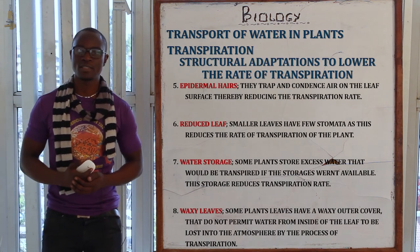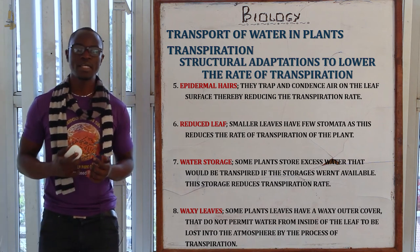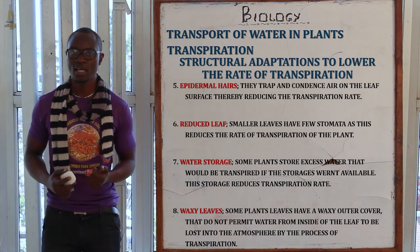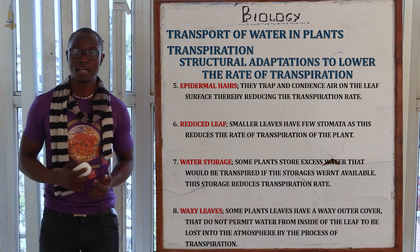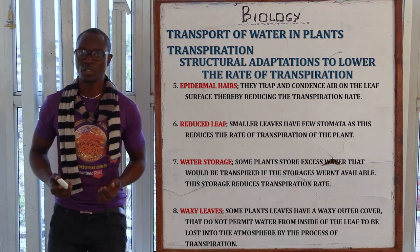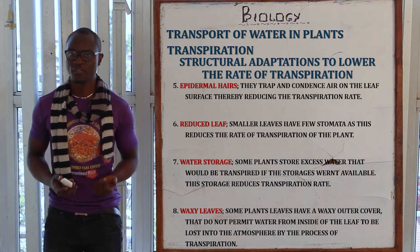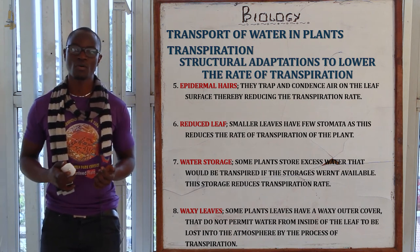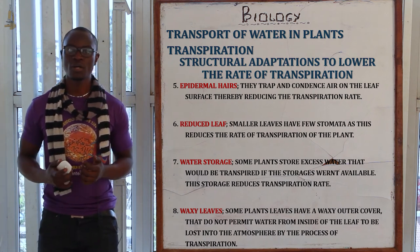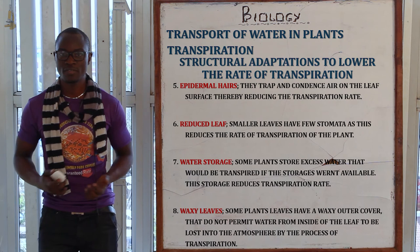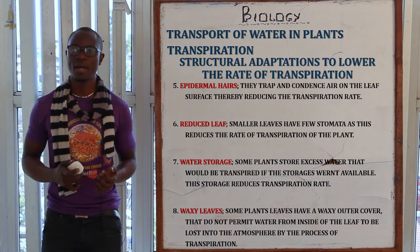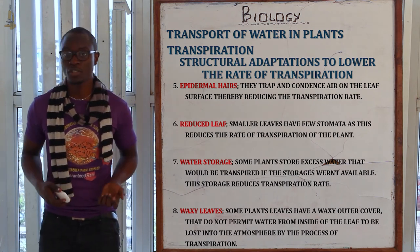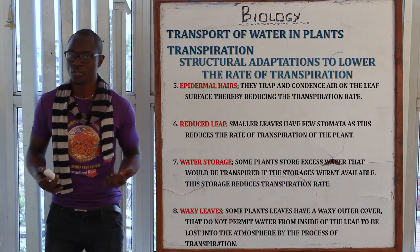Epidermal hairs trap and condense water vapor, reducing the rate of transpiration; leaves without epidermal hairs have a high rate of transpiration. Reduced leaf size also lowers transpiration. Some plants store water in stems or leaves to reduce transpiration, and some have wax-coated leaves. All these are structural adaptations by which plants reduce the rate of transpiration.